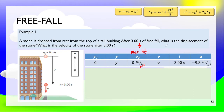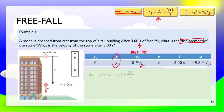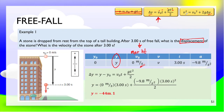Now we have the kinematics equations. According to the problem, let's look for the displacement first — we are looking for y. We have y in two equations here, but given the initial velocity, time, and gravity, the second formula is the most appropriate. Substituting the values, we get negative 44 meters.